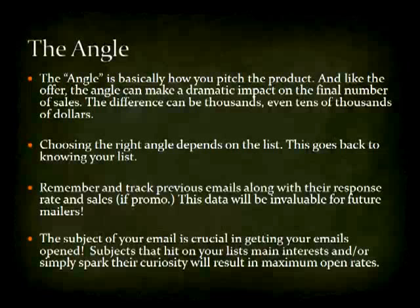The angle is just as important. You can have the best product, tailor-made for your list, but if you don't have the right angle, they're not going to see the value and they're not going to buy. The angle is basically how you pitch the product, and like the offer, it can make a dramatic impact on the final number of sales — the difference can be thousands, even tens of thousands of dollars. Choosing the right angle depends on knowing your list, knowing what triggers them to take action. Look at previous emails and promos you've done, which ones did well and which didn't, and tailor your angle on that. The subject of your email is crucial — subjects that hit on your list's main interest or spark their curiosity will result in maximum open rates, because a bad subject will result in very few people opening the email.